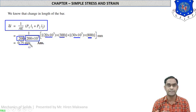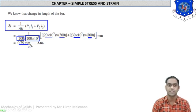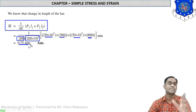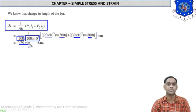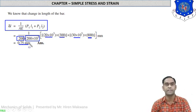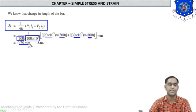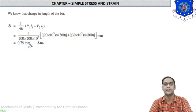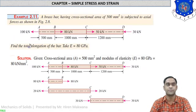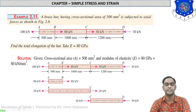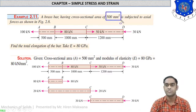The total deformation of bar A to C due to the 50 kN load at A and 30 kN load at C is 0.75 mm. This positive answer means that tensile forces are acting at all sections. Let us now look at a second numerical to be very clear about this.